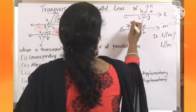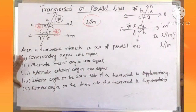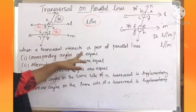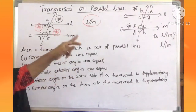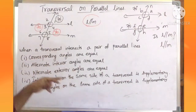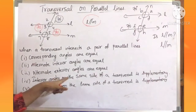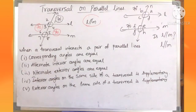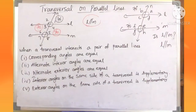So these properties work in reverse: if corresponding angles are equal, then the lines are parallel. If alternate interior angles are equal, then the lines are parallel. If alternate exterior angles are equal, then the lines are parallel. If interior angles on the same side of a transversal are supplementary, then the lines are parallel. If exterior angles on the same side of a transversal are supplementary, then the lines are parallel.